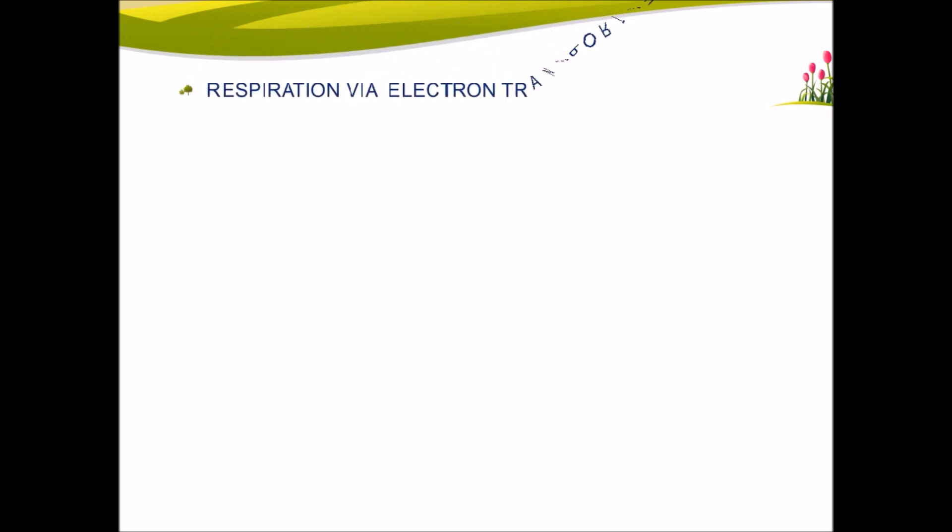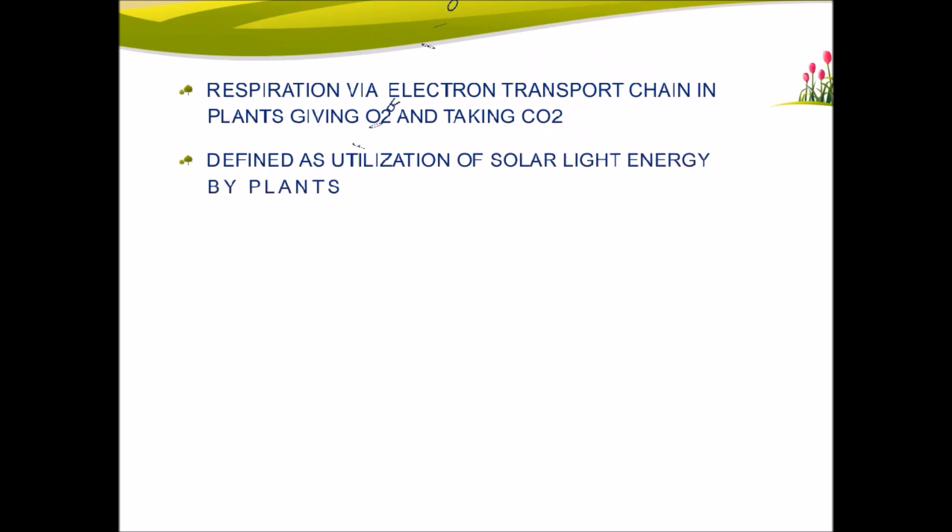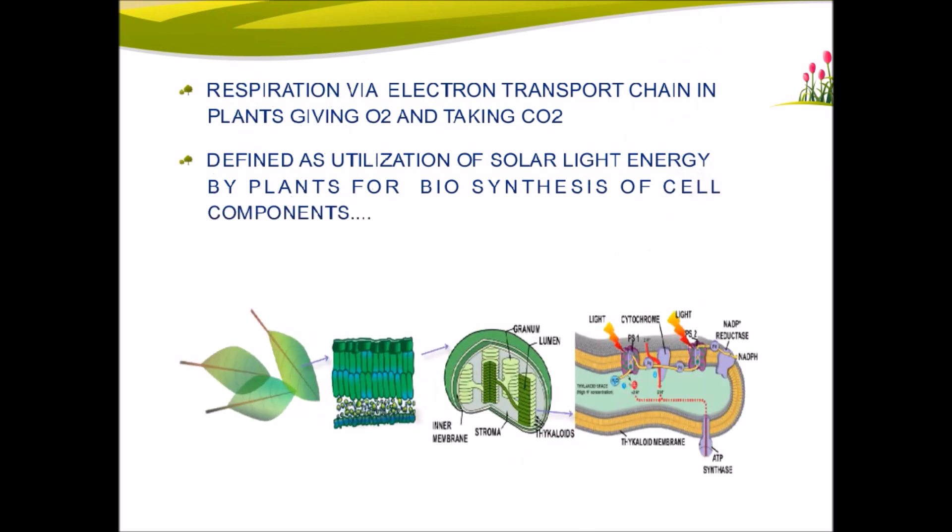I can define photosynthesis via electron transport chain in plants giving rise to oxygen and taking carbon dioxide. It can also be defined as the utilization of solar light energy by plants for biosynthesis of cell components and food materials.